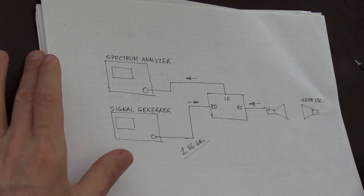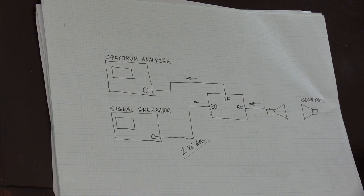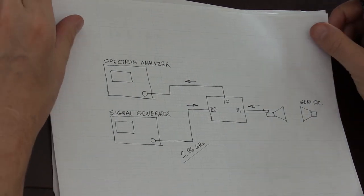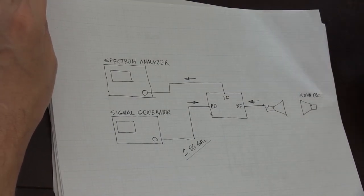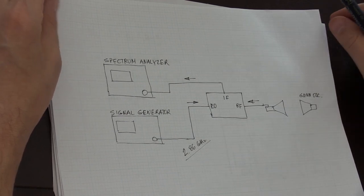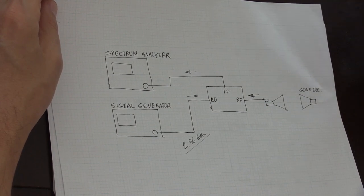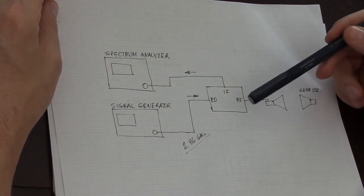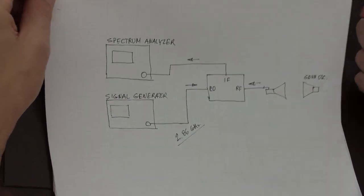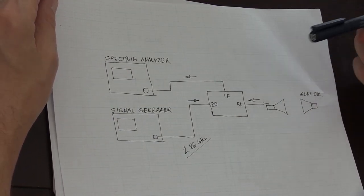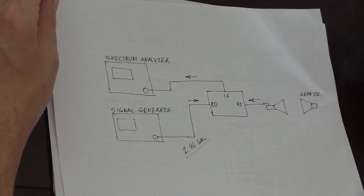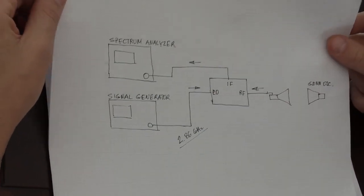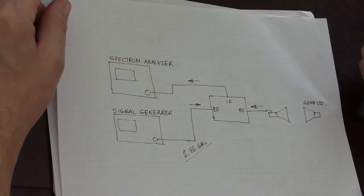As a result, the mixing product generated by the mixer is then fed into the spectrum analyzer. This is a very simple setup. What's important here is the math behind it — the calculations I had to make in order to look at a 10 gigahertz signal that lies outside of the frequency range of my spectrum analyzer.